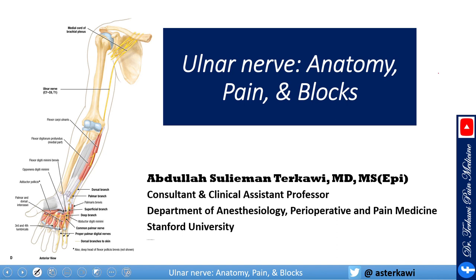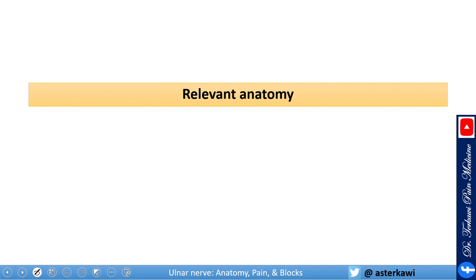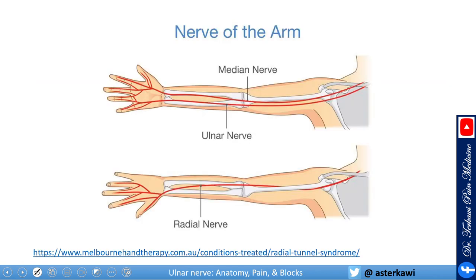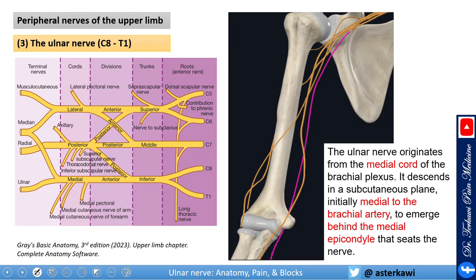Ulnar nerve anatomy, pain, and block. As usual, we'll get started with some relevant anatomy. This is an overview of how the ulnar nerve courses from the axilla all the way down to the hand in the medial aspect. The ulnar nerve originates from the medial cord of the brachial plexus and descends in the subcutaneous plane initially.